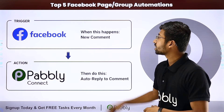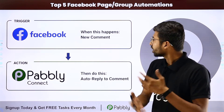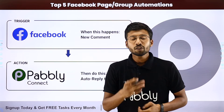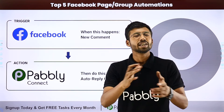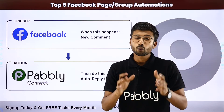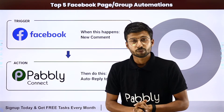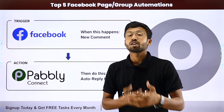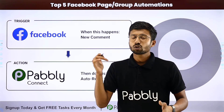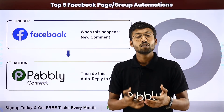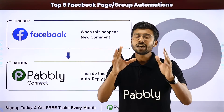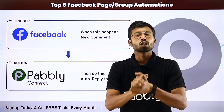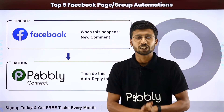My favorite automation is auto-replying to comments. Suppose I have a Facebook page that regularly receives lots of comments, and manually replying to each one is important to maintain a personal touch with my community — but it's very repetitive and time-consuming. Using this automation, based on the keywords in the comments users post on my Facebook page, it will automatically reply to those comments. This saves a lot of time while maintaining a personal connection with the community.